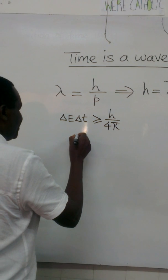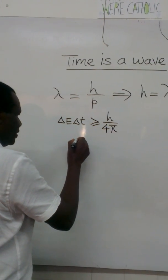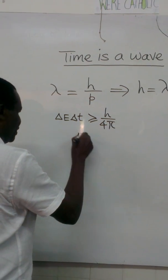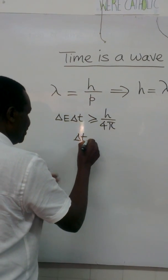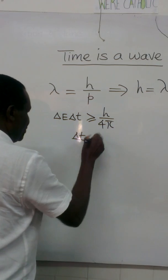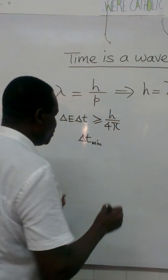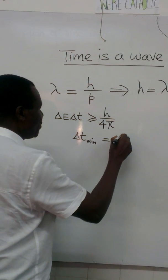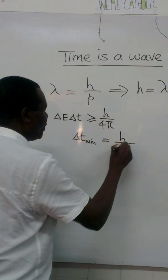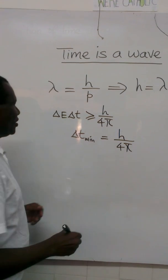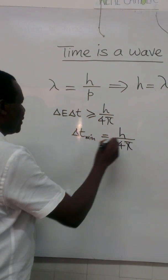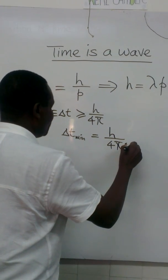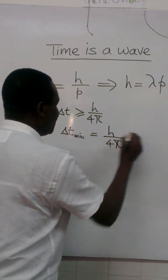This means the minimum uncertainty in time is then going to be h over 4pi, where h is Planck's constant, divided by the change in energy.